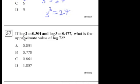If log base 2, no, not log base 2. They're saying log of 2 is approximately equal to 0.301. When people just write a log without a base, you usually assume it's base 10. If log base 10 of 2 is approximately 0.301 and log base 10 of 3 is approximately 0.477, what is the approximate value of log of 72?